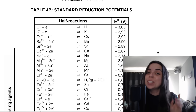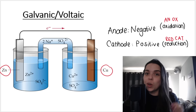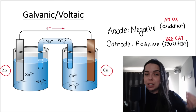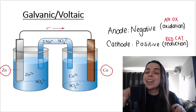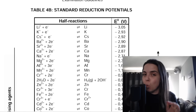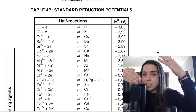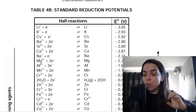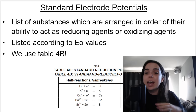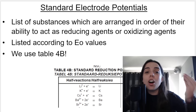In this lesson I'll be showing you how to use the standard reduction potentials table to determine which substance is oxidized and which is reduced, and therefore which substance is the anode versus which is the cathode in a galvanic cell. There is a table 4b and a table 4a — both standard reduction potentials tables, and they are inverses of each other. Most schools use table 4b, which is what I'll be using. These tables list substances arranged in order of their ability to act as reducing agents or oxidizing agents.